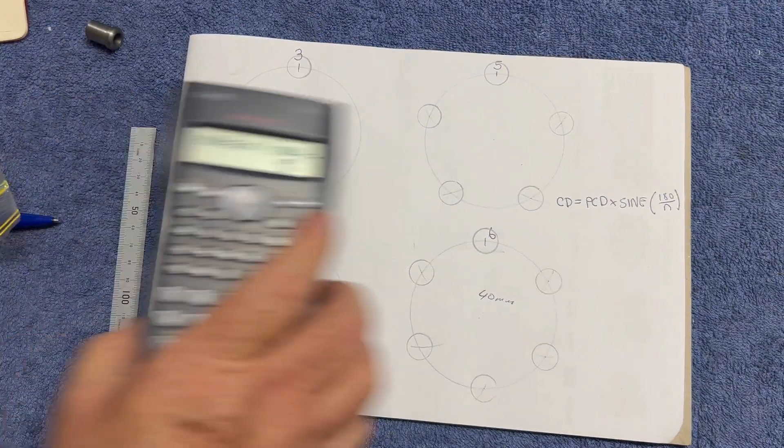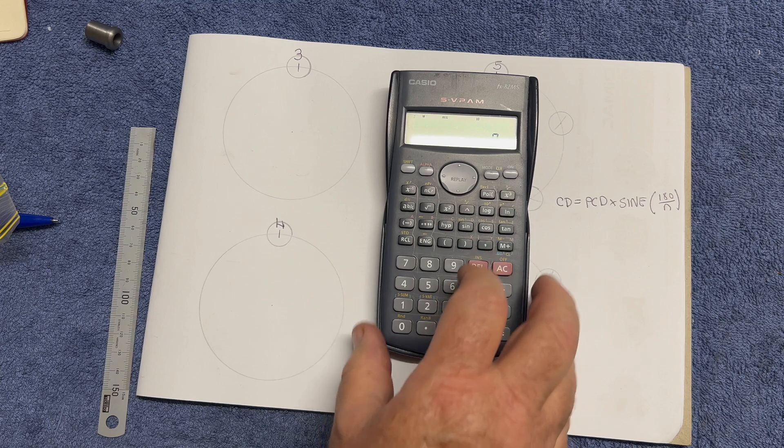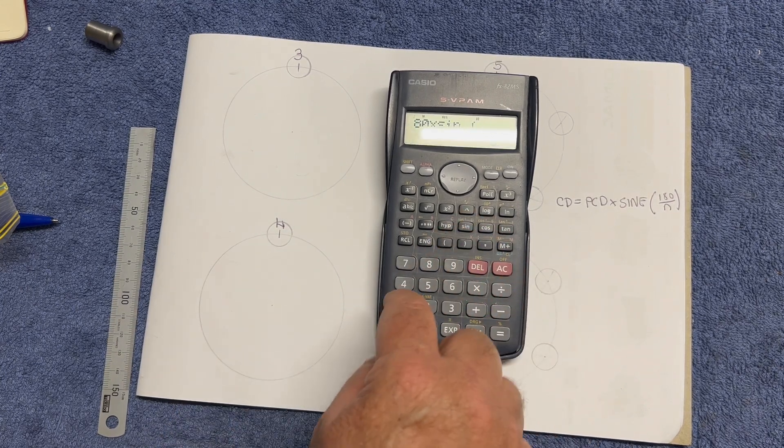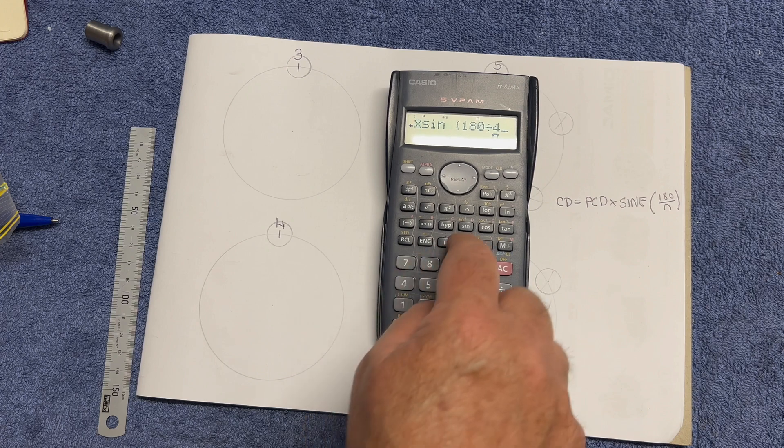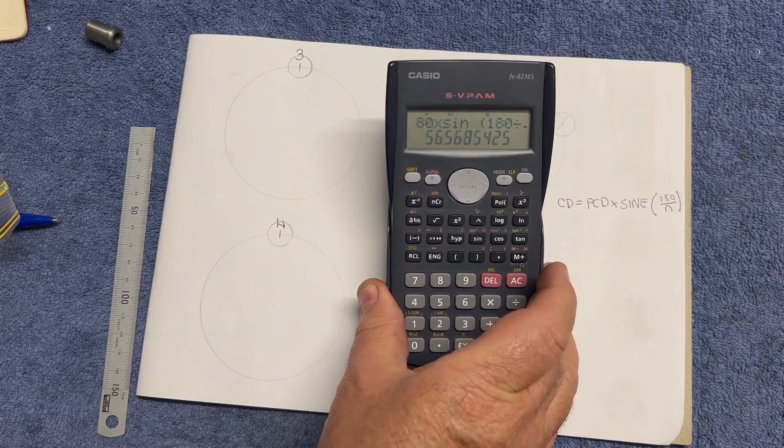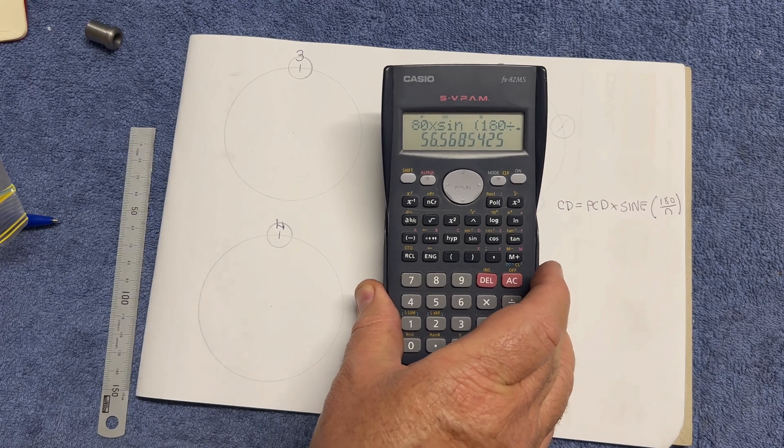Right, lucky last, let's go. So one more time. PCD is 80 times sine, open bracket 180 divided by four, close bracket equals. This one over here is 56.56, so round up 56.6.